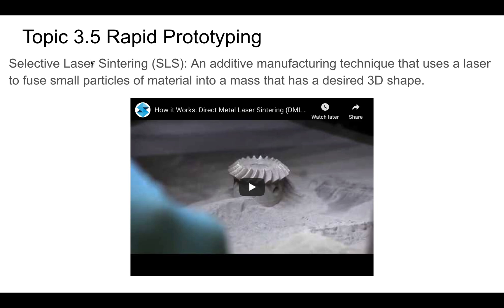This is selective laser sintering. It's an additive manufacturing process where a laser fuses together tiny particles of something into a 3D shape. This video really shows it in action - a laser shoots into and melts together this powder, and that forms the objects. It's pretty mesmerizing to watch. Go ahead and enjoy that video. And that's it for today. Thanks, guys.